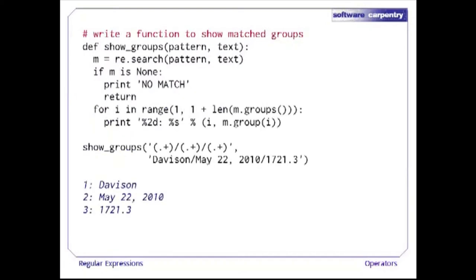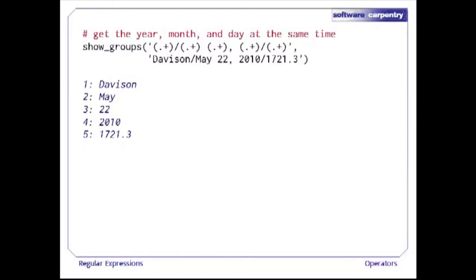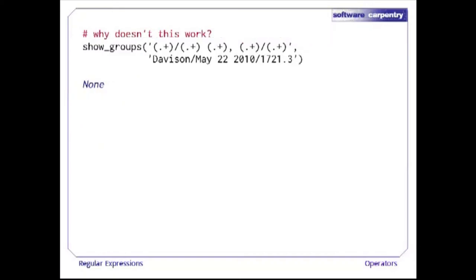We'll write a function that applies a pattern to a piece of text, reports if there is no match, and if there is a match, prints out all of the groups in order. Since we're using regular expressions to extract the field, the date, and the reading, why not break up the date while we're at it? This pattern pulls out the month, the day, and the year at the same time as it pulls out the site and the reading. But this record doesn't have a comma after the day, and the pattern does, so this pattern doesn't match this string.